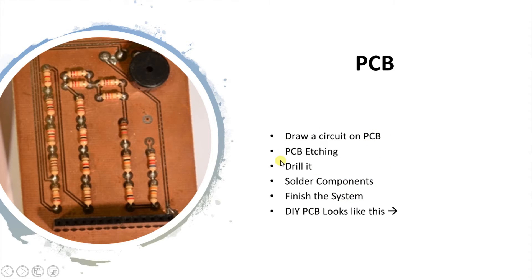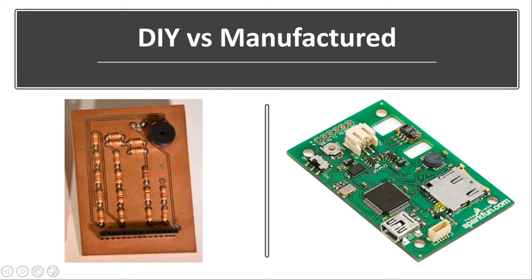All of these steps can be done in an industrial fabrication environment or in a DIY format as well. A DIY PCB looks like this — it can be created by hand. But if you are going for mass manufacturing, you need to order PCBs from a manufacturer. In that case, the PCBs look much more sophisticated. You can see it is a green-colored board with many different components very sophisticatedly soldered — that is machine work, while the other is handwork.